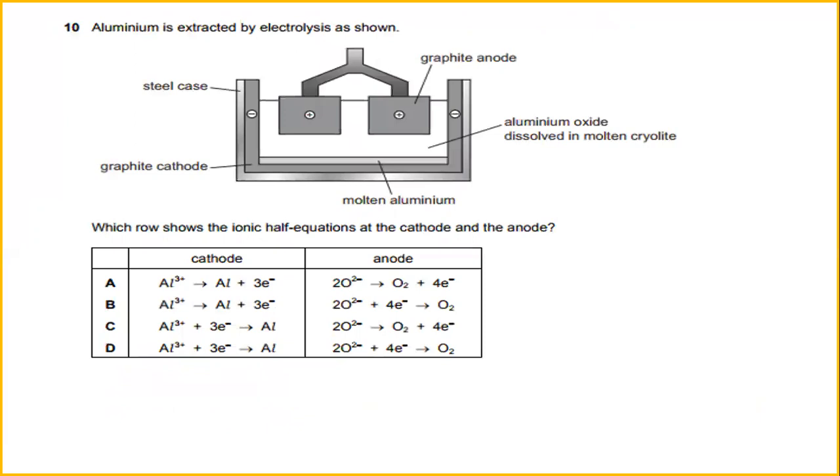Number 10. Aluminum is extracted by electrolysis as shown in the diagram, which will show the ionic half equation at the cathode and the anode. So the answer will be C.